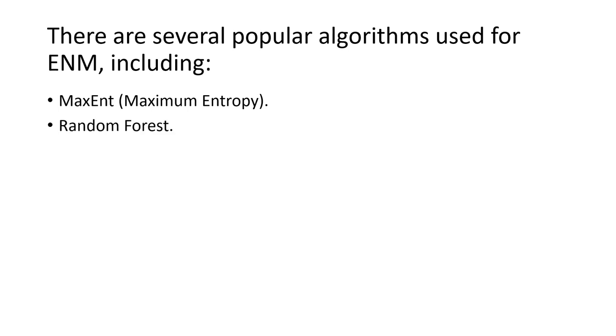The next one is random forest. This is a machine learning algorithm that uses an ensemble of decision trees to model species distribution, and it's known for its ability to handle complex interactions between environmental variables and has been used in ecological niche modeling to predict species distribution.